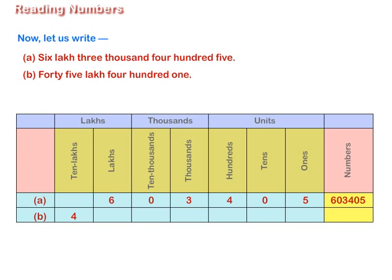In 45,004,001, 4 is at the ten lakhs place, 5 is at the lakhs place, 0 is at the ten thousands place, 0 is at the thousands place, 4 is at the hundreds place, 0 is at the tens place, and 1 is at the ones place. So, 45,00,001 is written as 45,00,001 in figures.